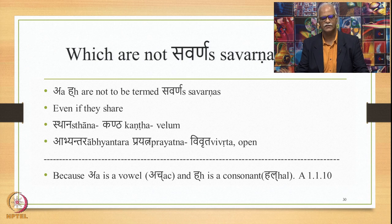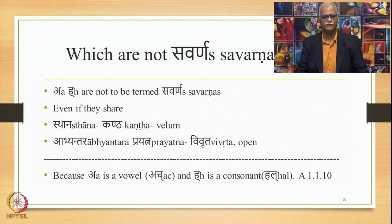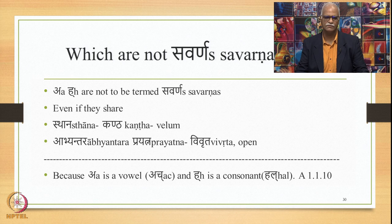Here are the sounds not to be termed Savarna of each other. First, A and H. A is a vowel, H is a consonant — A is Ach, H is Hal. Even if they share Sthana, namely Kantha, and Abhyantara Prayatna, namely Vivruta or Open, they are not to be termed Savarna following 1.1.10, because A is a vowel and H is a consonant — Nadjhalo, they are not to be termed Savarna.